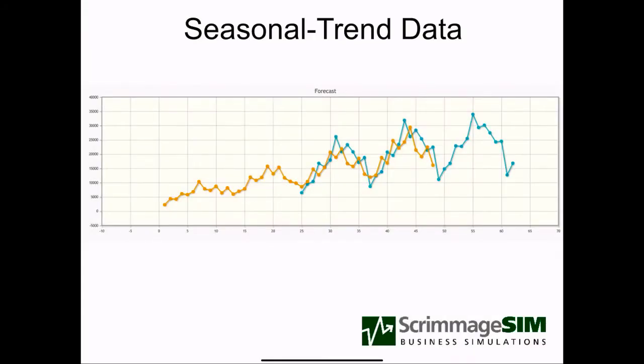So far we looked at smoothing models where there's no pattern in the data — we expect sales to be level with just random variability due to factors we don't understand. The first pattern we looked at was trend: we used regression, which fits a straight line. We also used Holt's model, which is an adaptive version of forecasting a trend that can adapt to shifts over time in the trend.